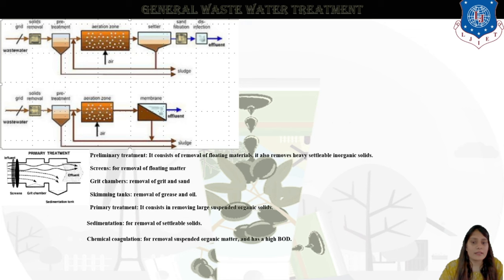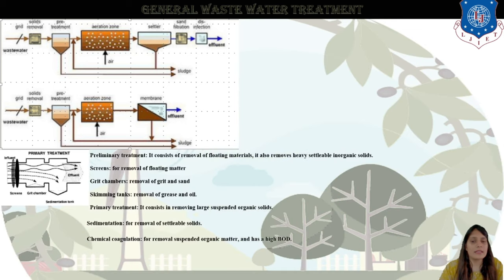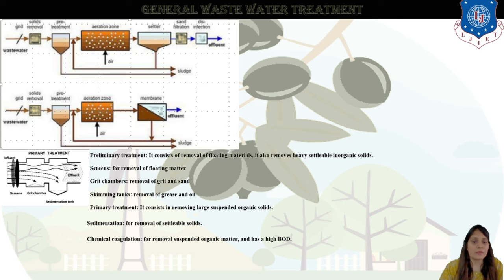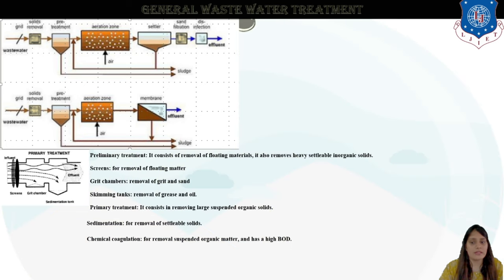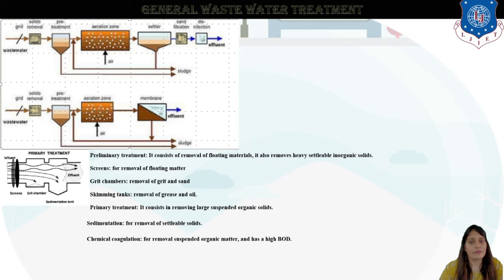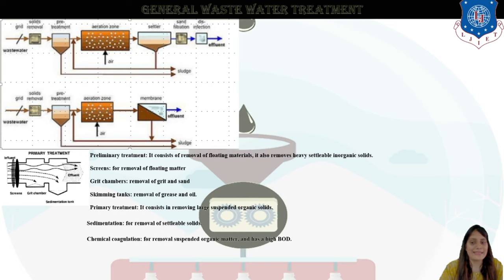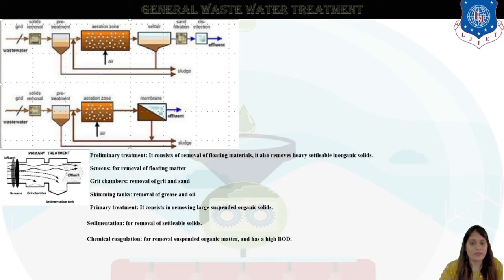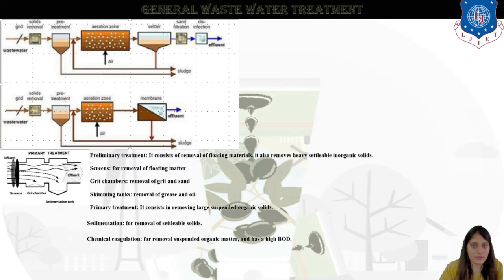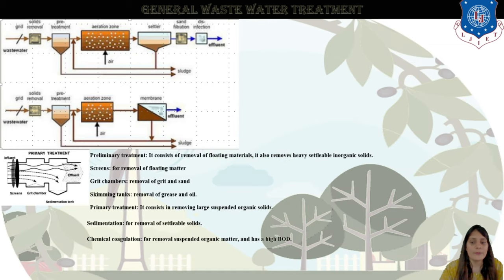In primary treatment, you can see it consists of removal of floating materials and removal of heavy settlable inorganic solids. The screen is shown for removal of floating materials, the grit chamber is shown for removal of grit and sand, and the skimming tank is shown — in the tank, removal of grease and oil can be done. This is the primary stage.